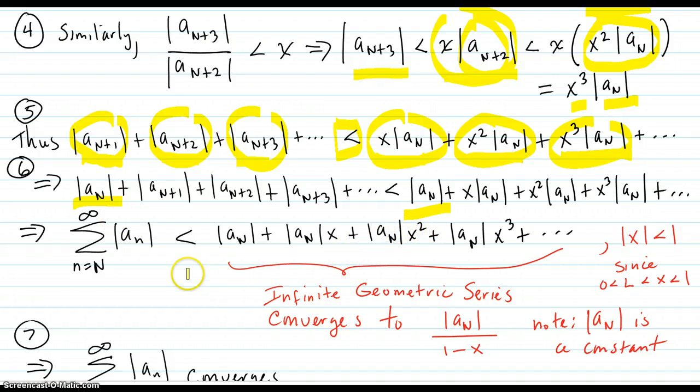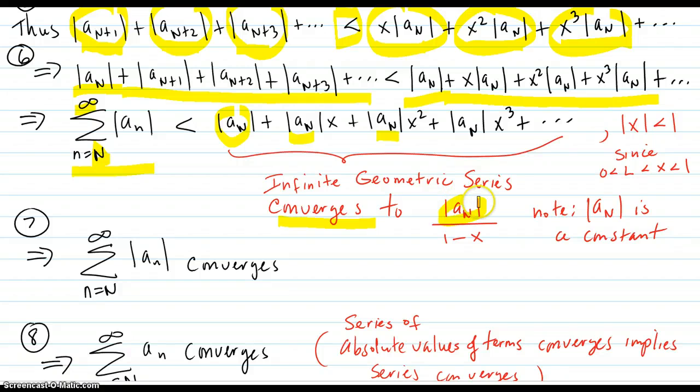And then we see that this left hand side, that sum series is from n, little n, from capital N to infinity of absolute value a_n. That's what that left hand sum is. And the right hand sum is a_n plus this plus this, just like it says there. And that is the geometric series of a constant, because a capital N is not changing. That's a specific term in the series. And that is a constant multiplying by the x, the 1, the x, x squared, x squared. That's a geometric series that we already know from previous, that that converges to this constant number over 1 minus x. So it converges.